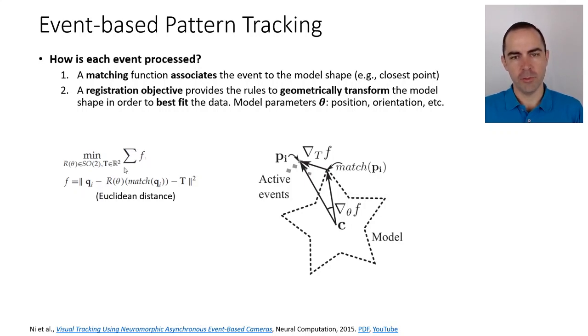We have this geometric objective, and we compute the derivative of this objective with respect to the parameters of the model—that gives us a gradient. We could take a step against the gradient to minimize this objective function, and that is what's called here the update rules: the rules to geometrically transform the model shape in order to best fit the data. If we take some steps against the gradient, ideally we follow down the valley of this objective function and minimize the distance between the two point sets.